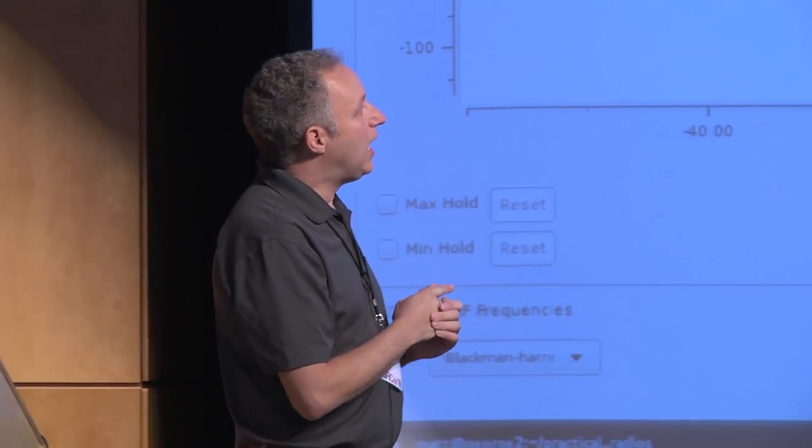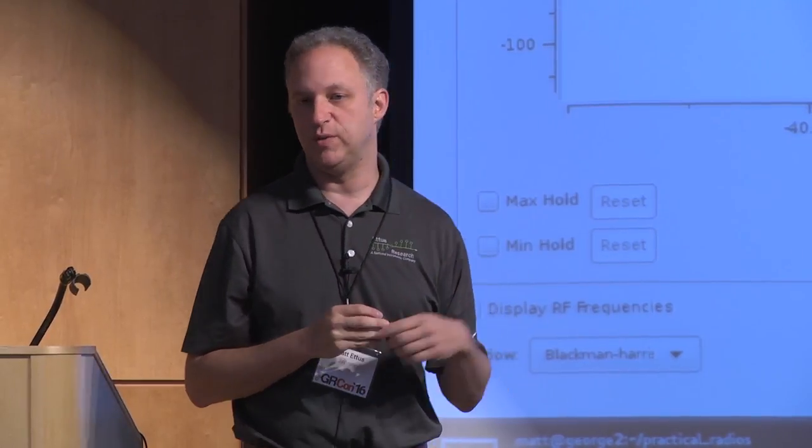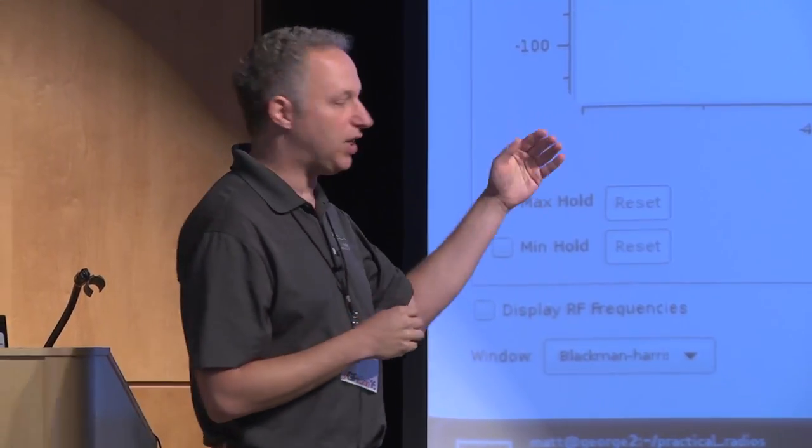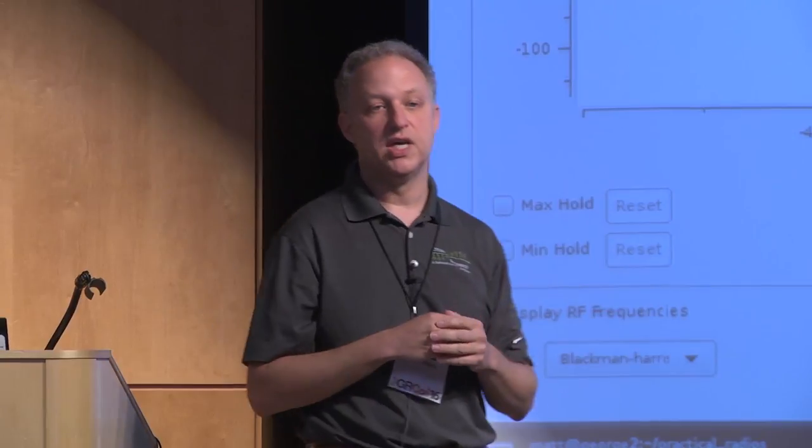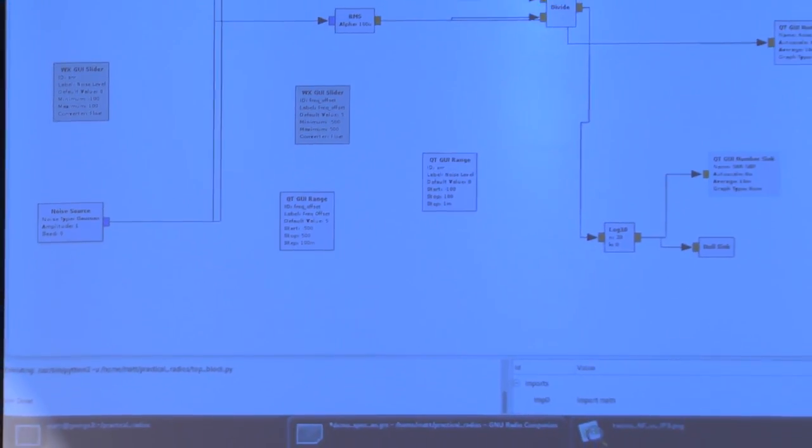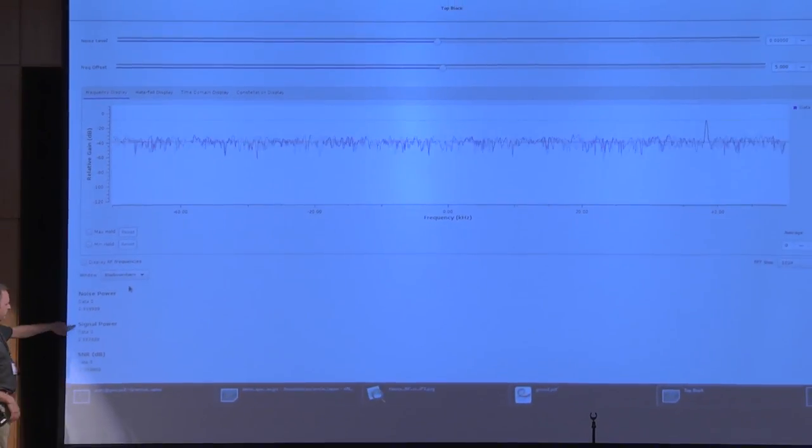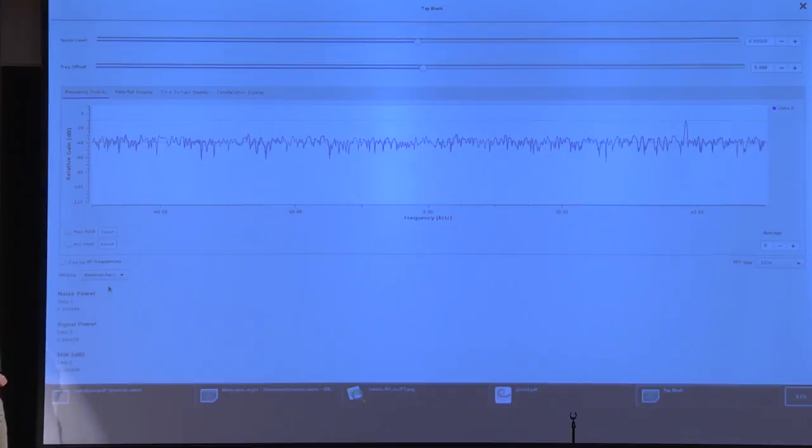Now, if we look at the peak of this in the display, it's about minus 9 dB. And if we look at the, I'll turn up the averaging here. And if we look at the noise level, it's about minus 39 dB for a difference of 30 dB. So can anybody tell me what the SNR of this signal is? Everybody's quiet, good, because you know it's a trick question.